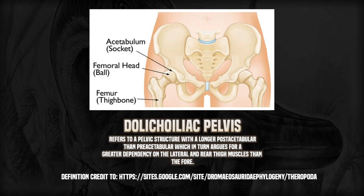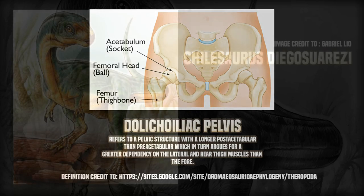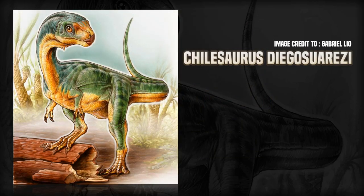In a dolichiliac pelvis, the region behind this surface is larger because it carries more of the weight of the thigh muscles. Basically, dolichiliac dinosaurs have more strength in the back end of their thigh muscles than they do in the front — there's more mass in the back of their thigh than in the front, and it is a trait typically reserved for theropods. Similarly, the stocky arms of Chilesaurus suggest it's a theropod, as do the pockets of space found in its vertebrae, which are typically found in theropods as a way of shifting their center of mass, making them more agile and increasing their hunting prowess.